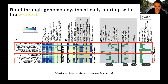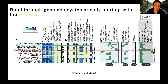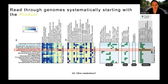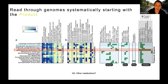We might also be interested in methanogenesis. The key functional gene is mcrA, highlighted in the methane block of the product. From this dataset, one organism has the potential to carry out methanogenesis because it has an mcrA. From there, you can scan over to see what substrates it can use — this organism has the potential to use acetate, trimethylamine, dimethylamine, methanol, and possibly CO2.